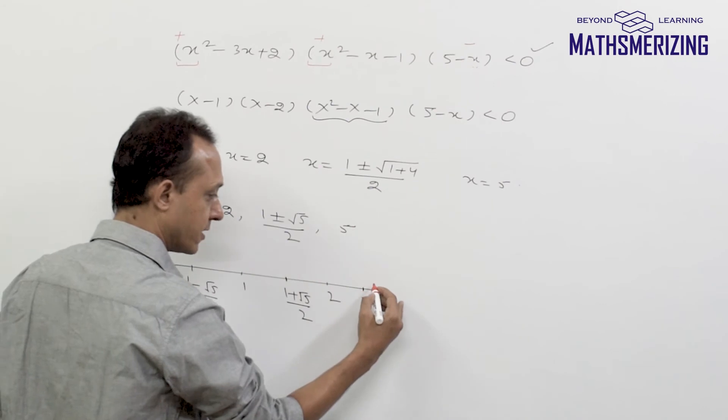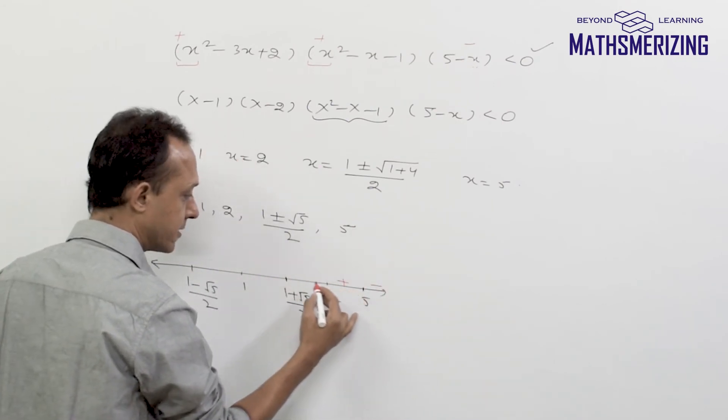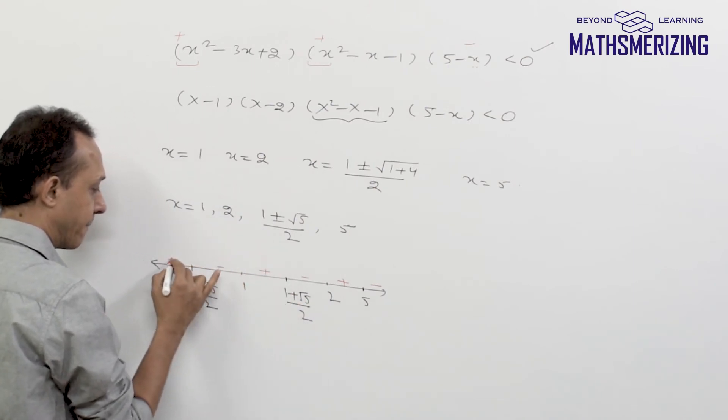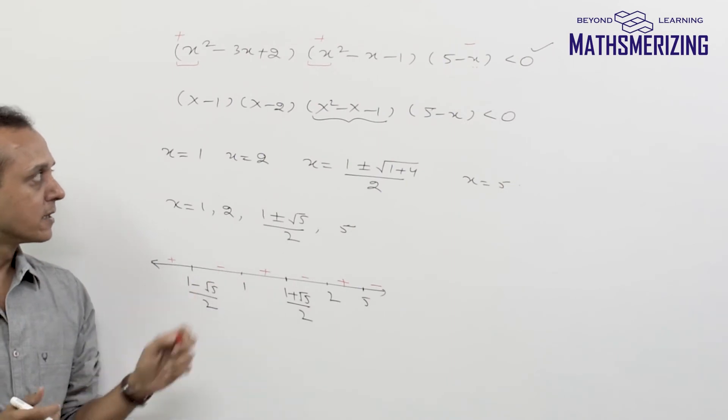So I'll write this as minus. So this is minus, and then I'll write alternative plus and minus signs. So this is minus, plus, minus, plus, minus, and plus. So this is minus, plus, minus, plus, minus, and plus.